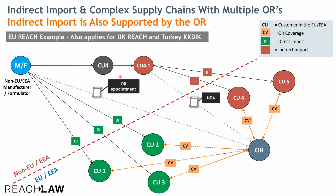This is called indirect import because it comes indirectly from the manufacturer formulator appointing the OR into the market, and in some cases only the only representative will know this. In some cases, this company says they don't need an NDA and it's fine to tell the manufacturer formulator about them — in those cases we disclose the information. But if they want to keep things confidential, then an NDA is in place. Typically, if they ask us not to disclose, we would not disclose regardless of whether there's an NDA or not, but in some cases they wish to have one.